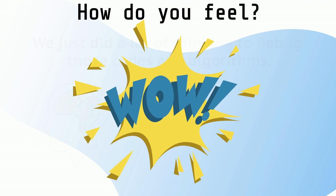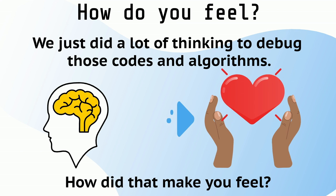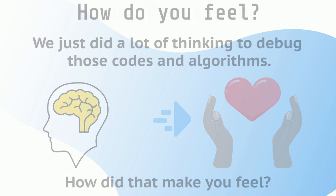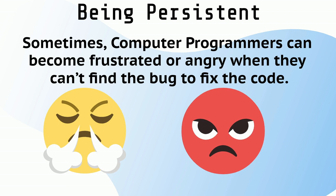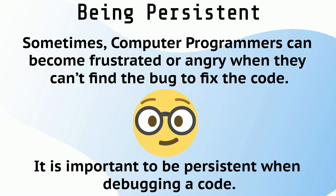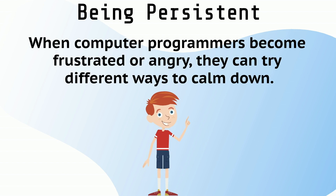Wow! We just did a lot of thinking to debug those codes and algorithms. How did that make you feel? Sometimes, computer programmers can become frustrated or angry when they can't find the bug to fix the code. It is important to be persistent when debugging a code. This means that you keep trying and don't give up, even when things don't go right the first time. When computer programmers become frustrated or angry, they can try different ways to calm down.